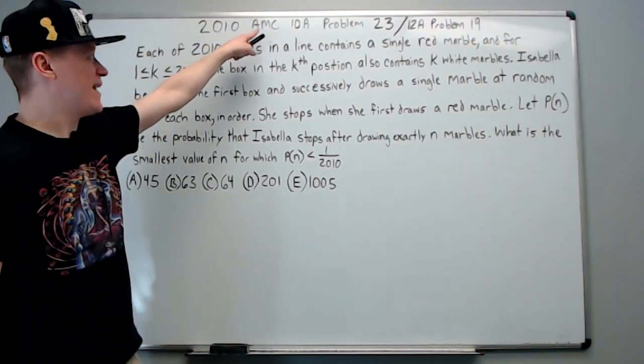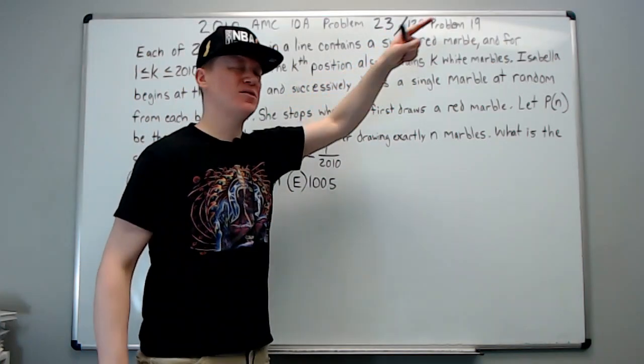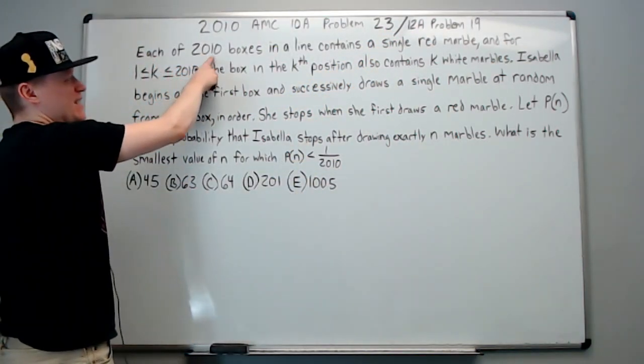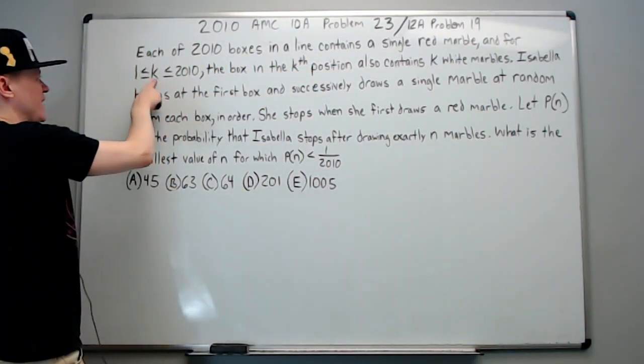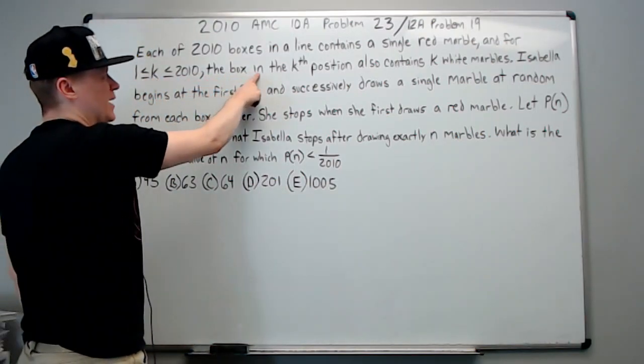All right, this is the 2010 AMC 10A problem 23, it was also the 12A problem 19. Each of 2010 boxes in a line contains a single red marble, and for k between 1 and 2010 inclusive, the box in the kth position also contains k white marbles.